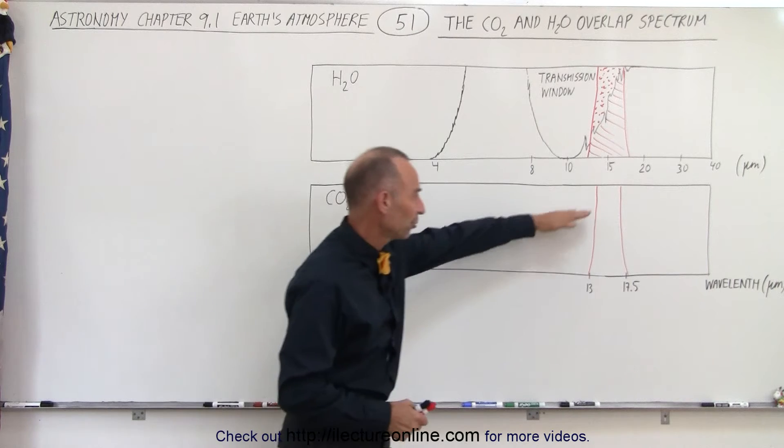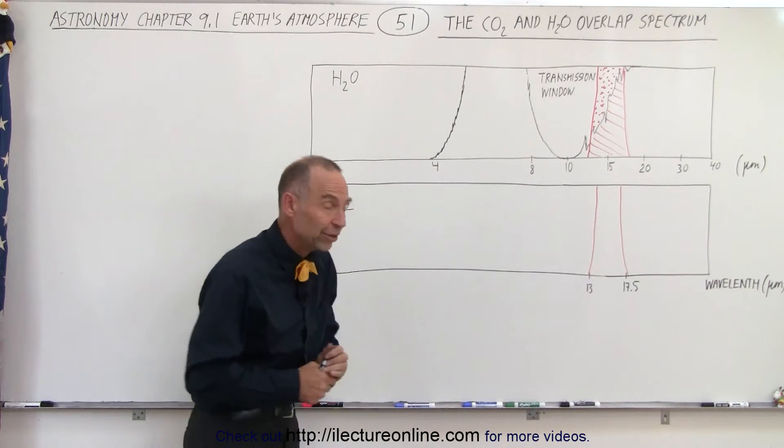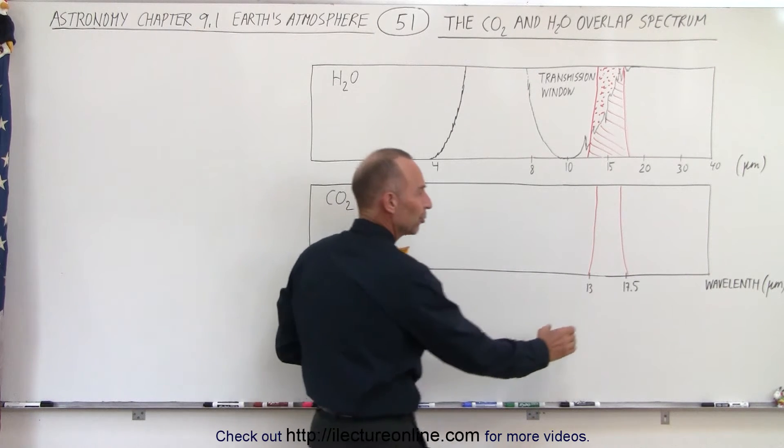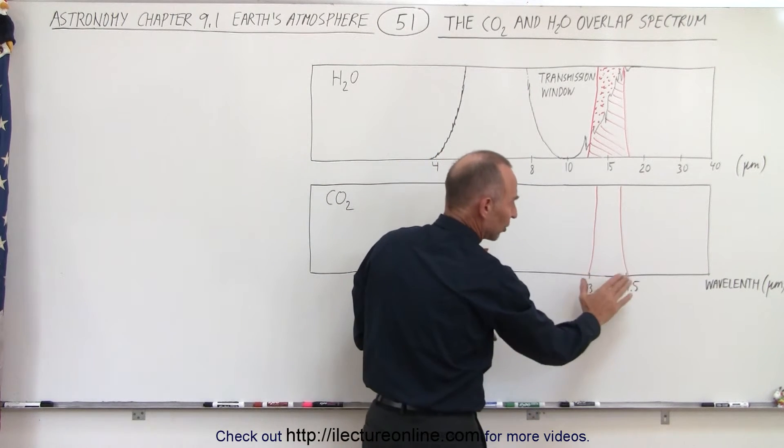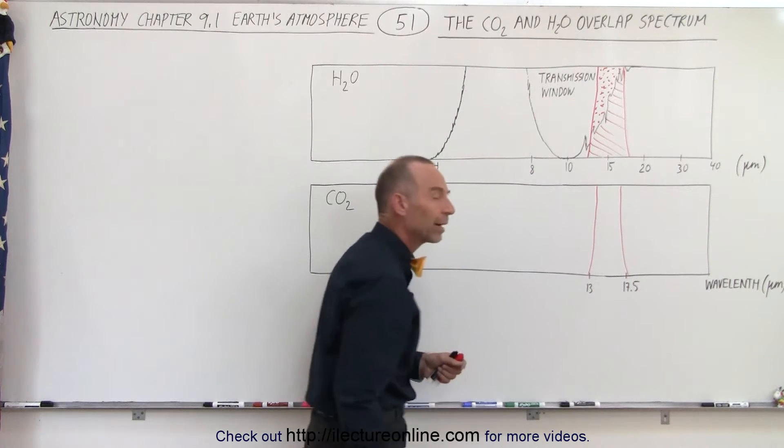So here you can see this is the absorption spectrum of carbon dioxide that we've been talking about over the last several videos, where we realize how effective carbon dioxide is in absorbing wavelengths of radiation coming from the surface of the earth between 13 and 17.5 micrometers.